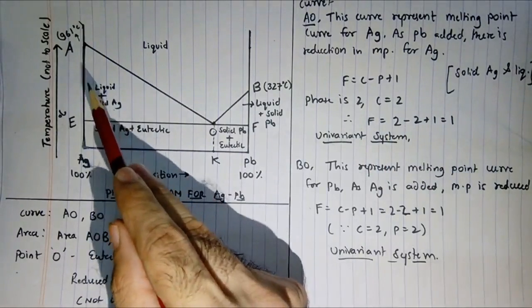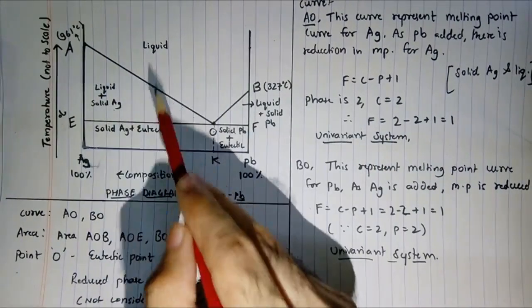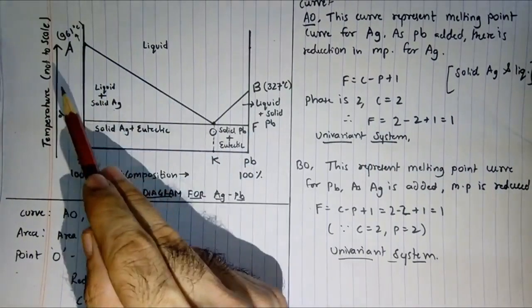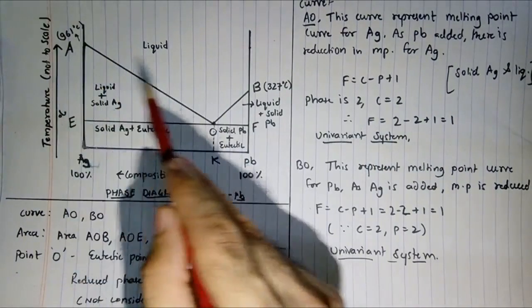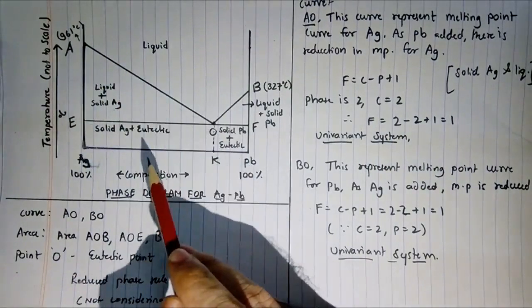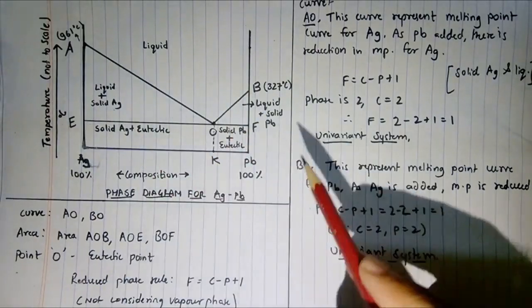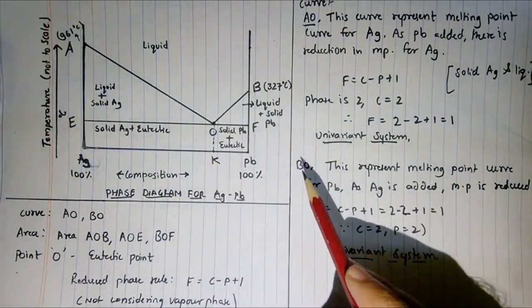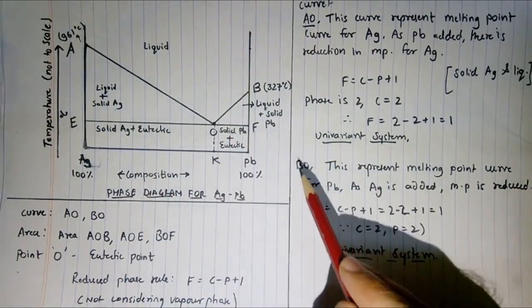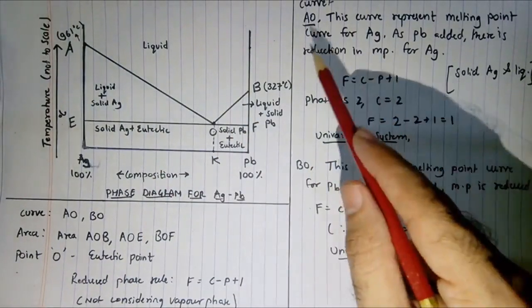Since f = 1 (univariant), you do not need to specify two variables. If you just specify temperature, you will get the composition, or vice versa. Curve BO is very similar to curve AO.